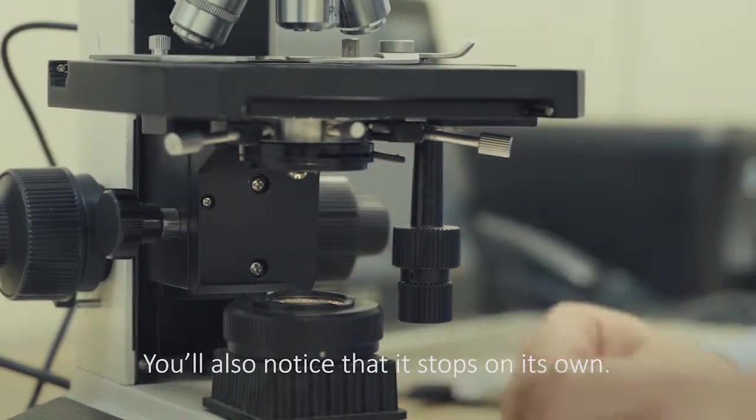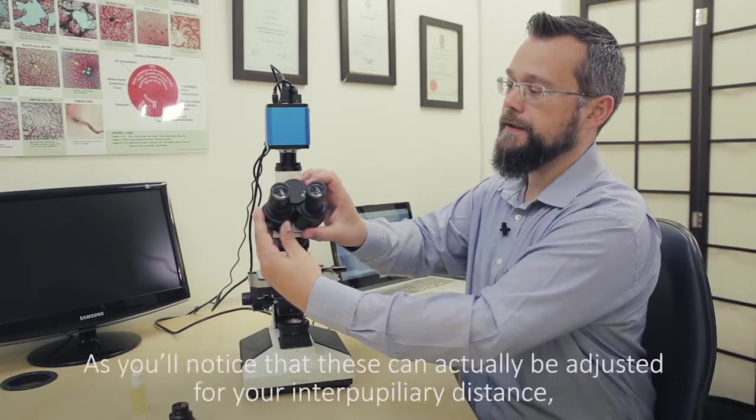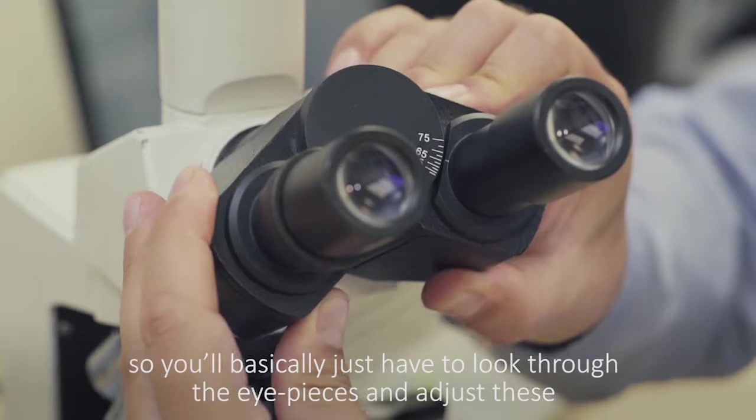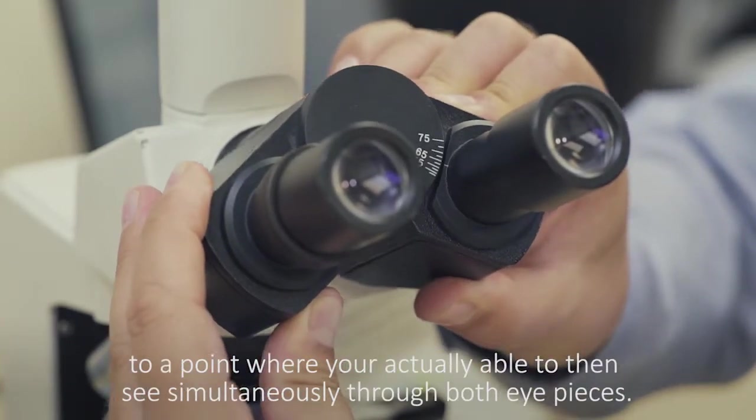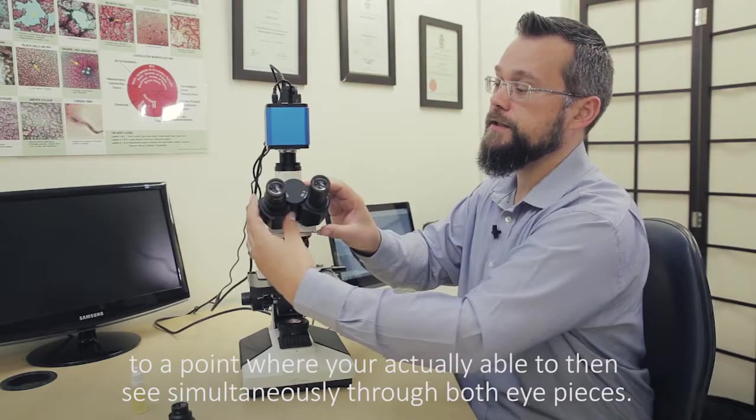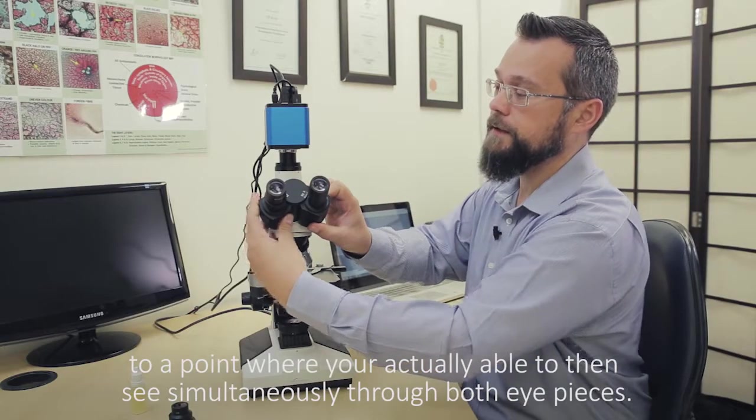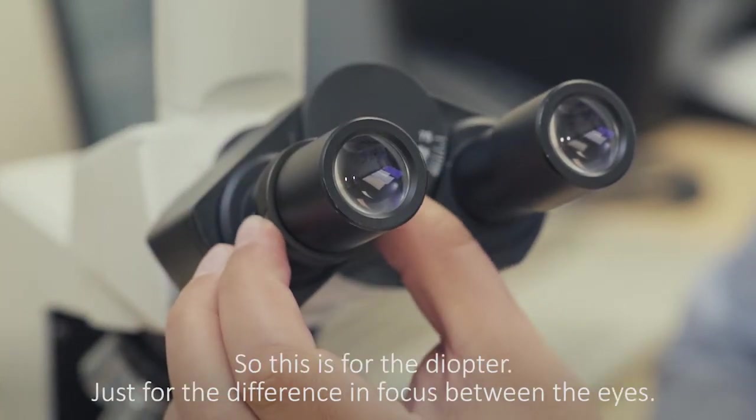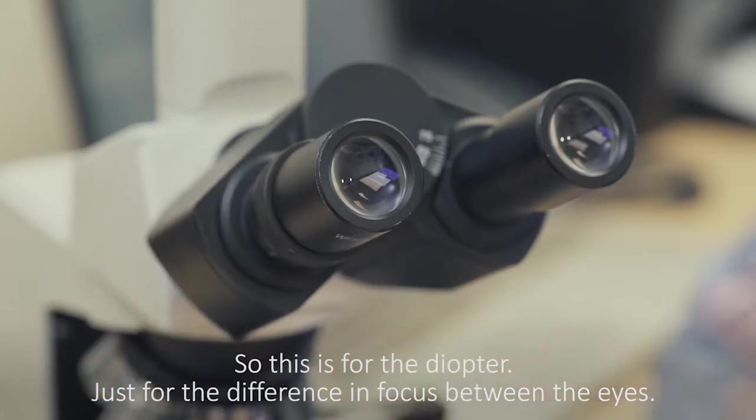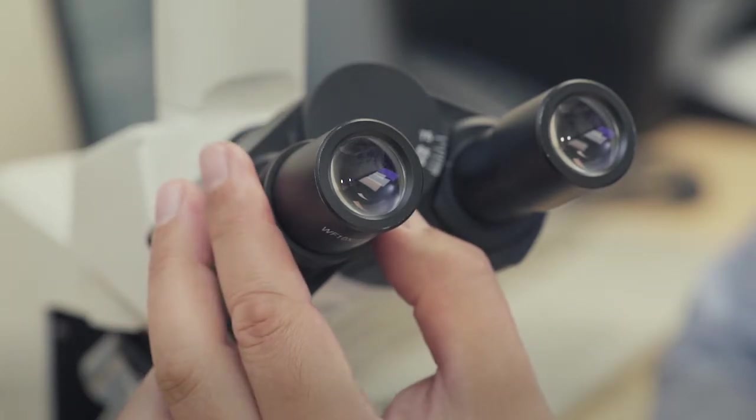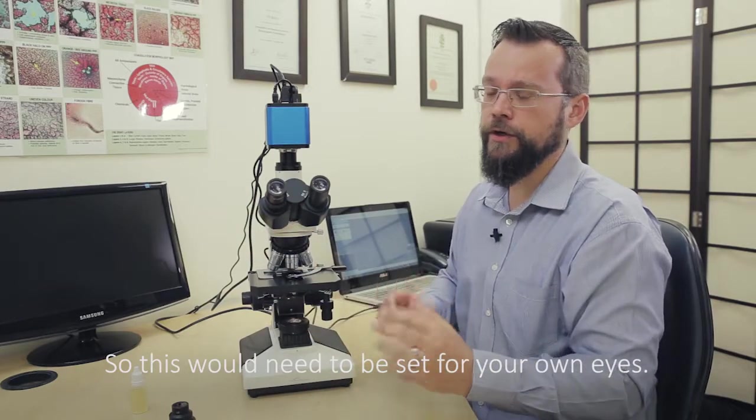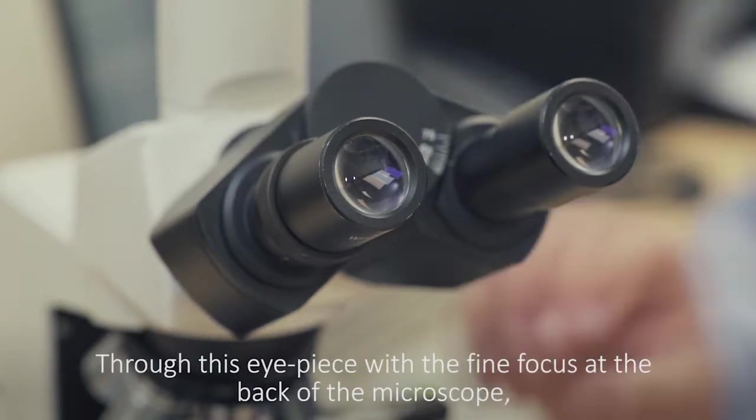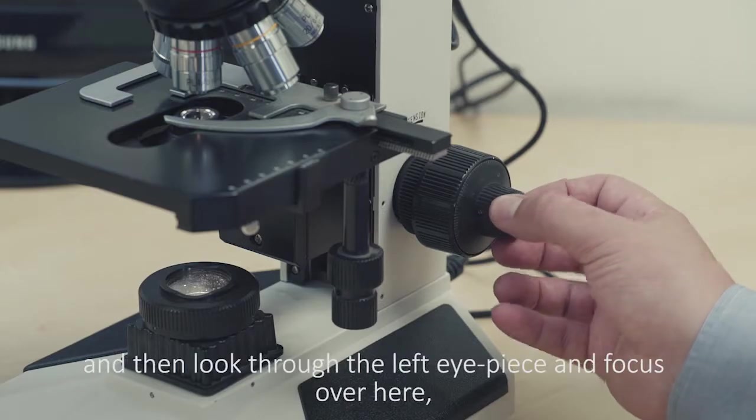Lastly, the eyepieces. You'll notice that these can actually be adjusted for your interpupillary distance. So you basically just have to look through the eyepieces and adjust these to a point where you're actually able to then see simultaneously through both eyepieces. Then on the left hand side we have something that can be adjusted here as well. This is for the diopter, just for the difference in focus between the eyes. So this would need to be set for your own eyes. We would focus the sample through the right hand side, through this eyepiece, with the fine focus at the back of the microscope. And then look through the left eyepiece and focus over here so that both sides are clearly in focus.